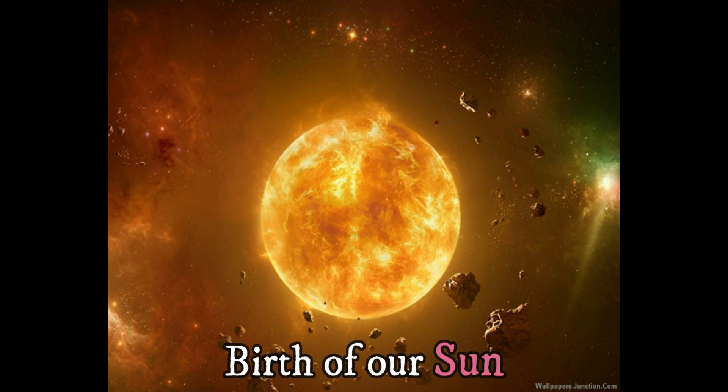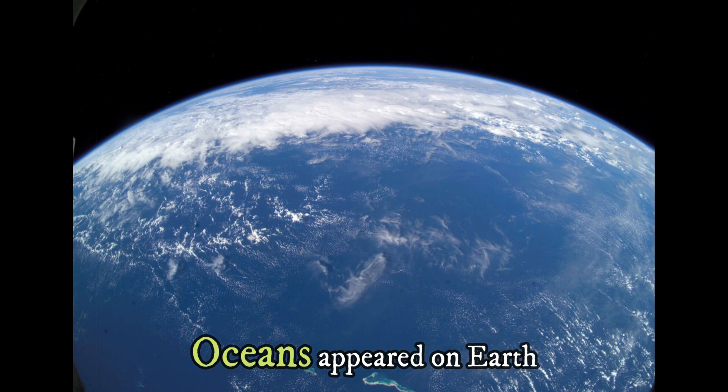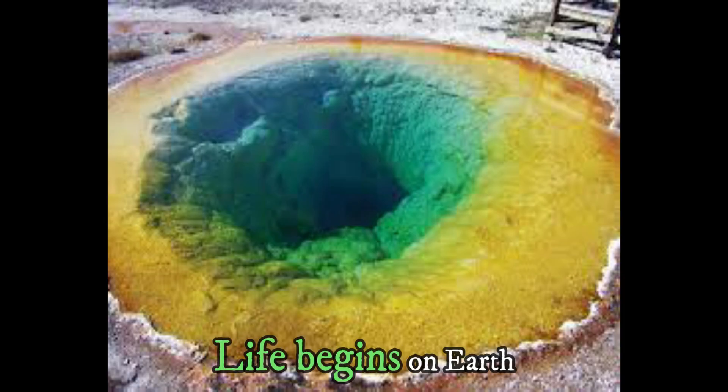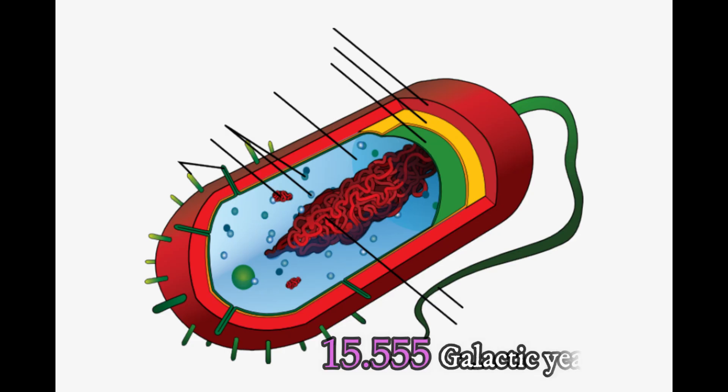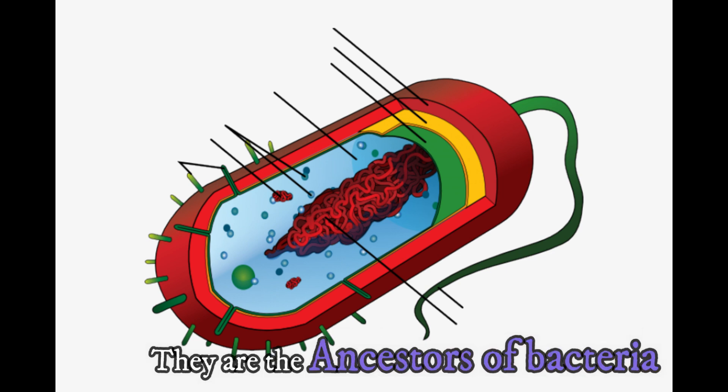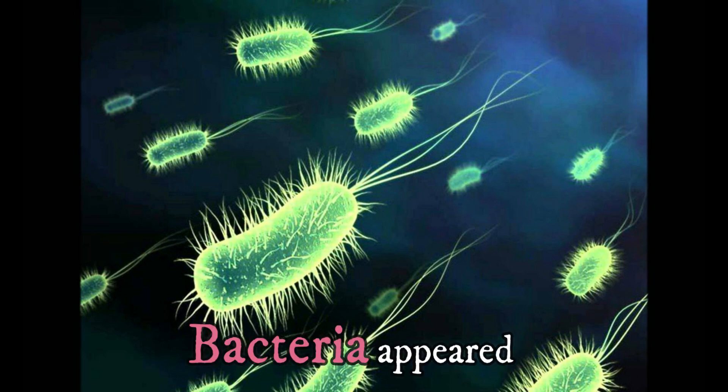17 to 18 galactic years ago, oceans appeared on Earth. 16.889 galactic years ago, life begins on Earth. 15.555 galactic years ago, prokaryotes appeared. They are the ancestors of bacteria. 12 galactic years ago, bacteria appeared.